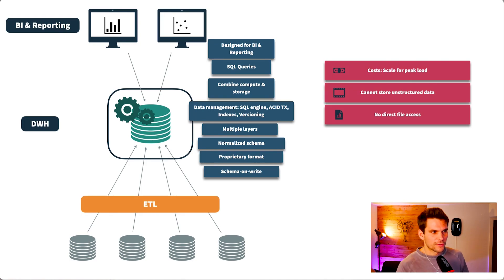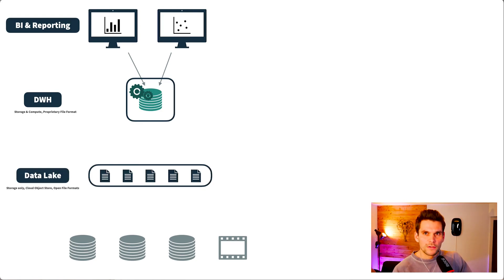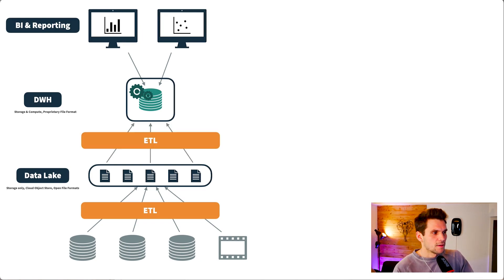This leads us to the second generation data analytics platform architecture. The second generation looks like this: we still have a data warehouse for our BI and reporting use cases, and now we introduce another layer — the data lake — which is simply a cloud object store, essentially a collection of files. Our data is ETL'd into the data lake, and from there a subset of data is ETL'd into the data warehouse.